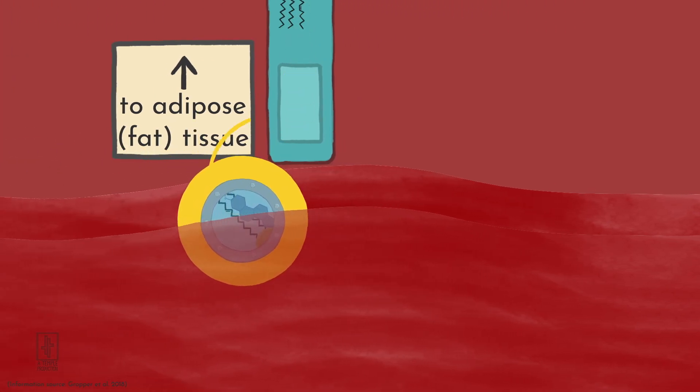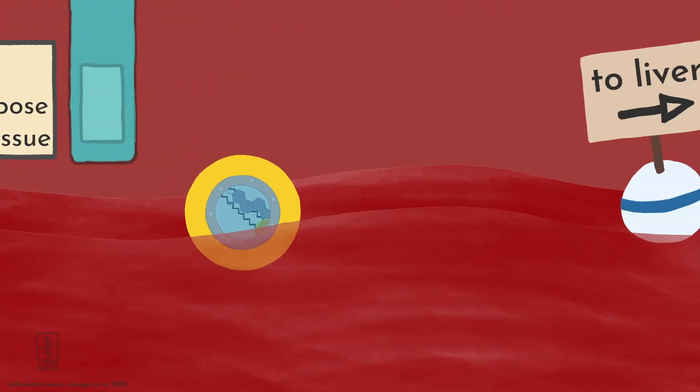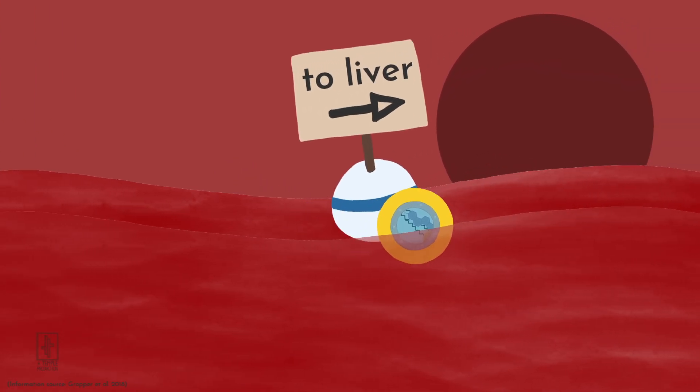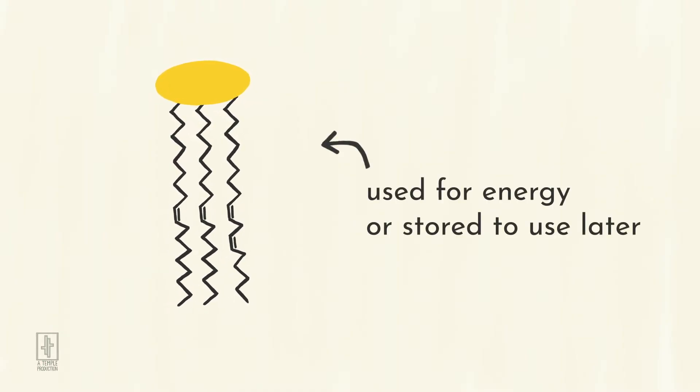As they travel around dropping off fats, they shrink until they become chylomicron remnants and then they travel to the liver where they are reprocessed. The fats that were dropped off can be used for energy or stored to use later.